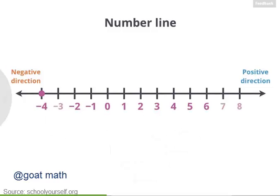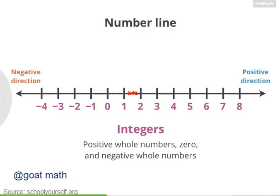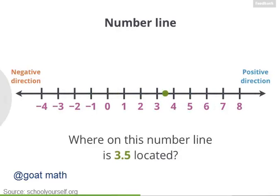Let's assign the appropriate numbers to the remaining tick marks. All these numbers we've written so far are called integers. An integer is any number that's a positive whole number, 0, or a negative whole number. Between the integers on this number line, we have all the numbers that are not whole numbers. For example, 3.5 is located halfway between 3 and 4.